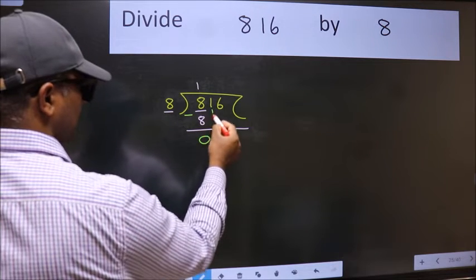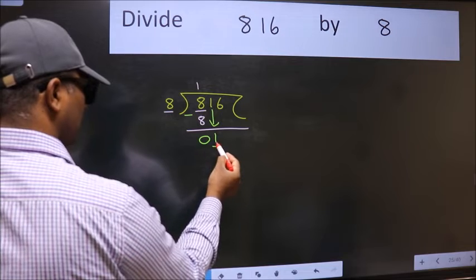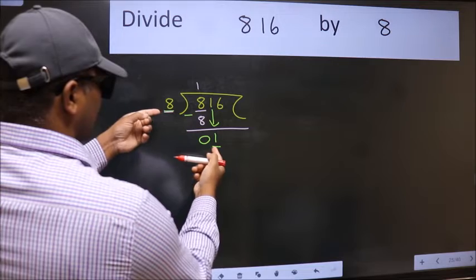After this, bring down the beside number. So, 1 down. Now, here we have 1 and here 8. 1 is smaller than 8.